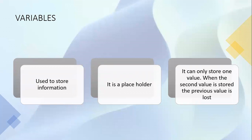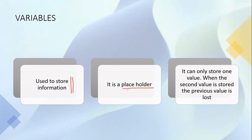So what is a variable? A variable is basically used to store information. That's the basic reason for making use of variables — we want to store information. Think of a variable as a placeholder. You should also take note that a variable can only store one value. When a second value is stored, the previous value is lost.